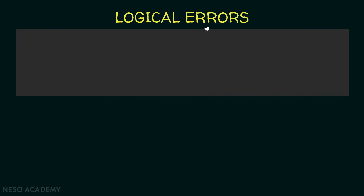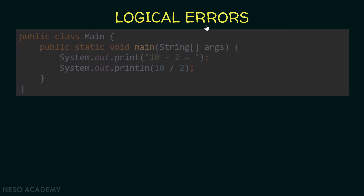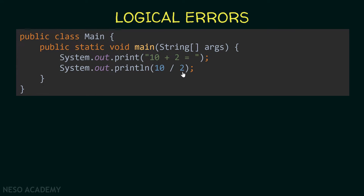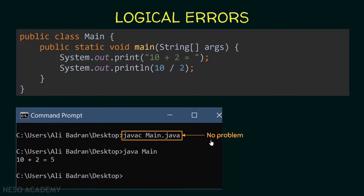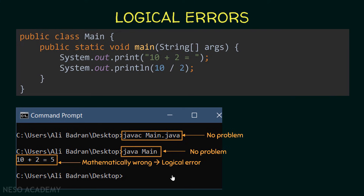Now let's see logical errors. These are errors related to the programmer — they are not syntax errors and they are not runtime errors. They happen because the programmer made a mistake and didn't think carefully before developing the program. For example, we are printing '10 plus 2 equals' and then printing 10 divided by 2. You can compile and run this with no problem, but the output is wrong: 10 plus 2 equals 5, but it should be 12. The programmer used the division operator instead of the addition operator — this is mathematically wrong, so it's a logical error. To avoid logical errors, think carefully before developing your program, and whenever you see something wrong, go back and fix it.